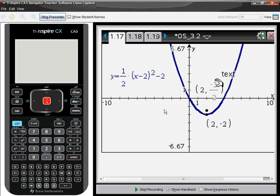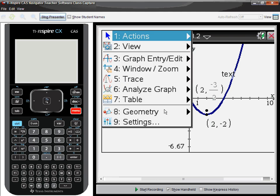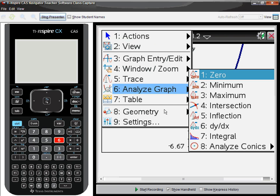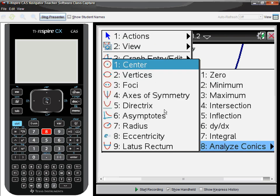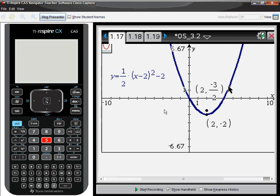If I want to find the directrix, 6, 8, the directrix is number 5. And notice it actually gives me the line y equals negative 5 halves as a dotted line. So that's for parabola. But let's move on to an ellipse.